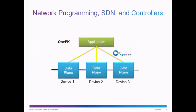In this image, you can see this example further. In this case, the application has been developed using Cisco's ONE-PK Open Network Environment Platform Kit, and the software has been written in C, Java, or Python programming languages. The application can program the data plane on the three switches — Device 1, Device 2, Device 3 — using the OpenFlow standard.